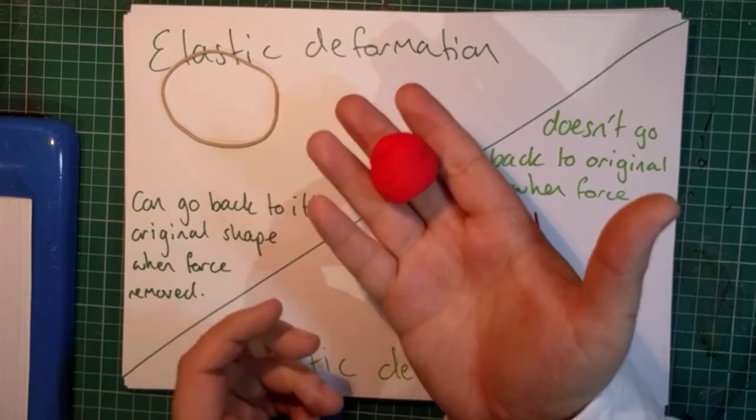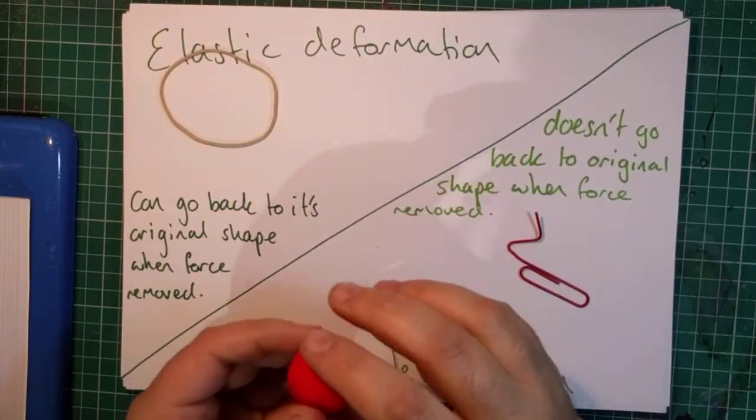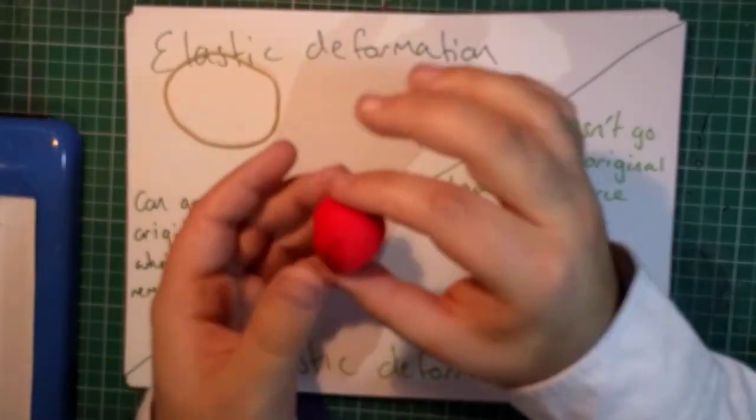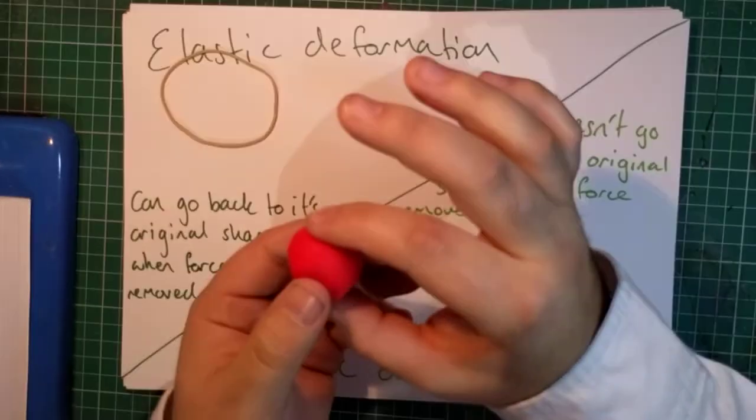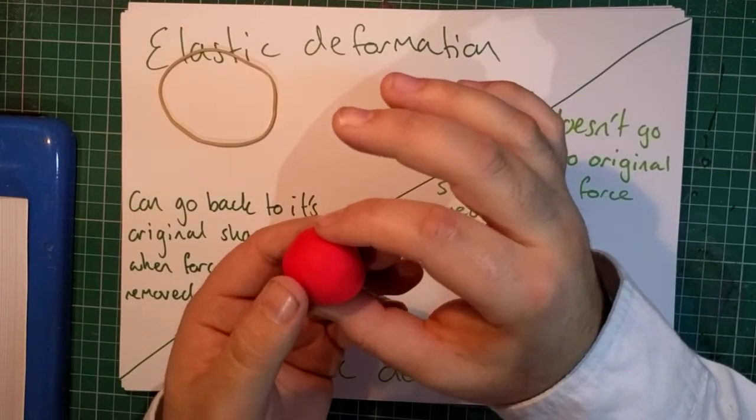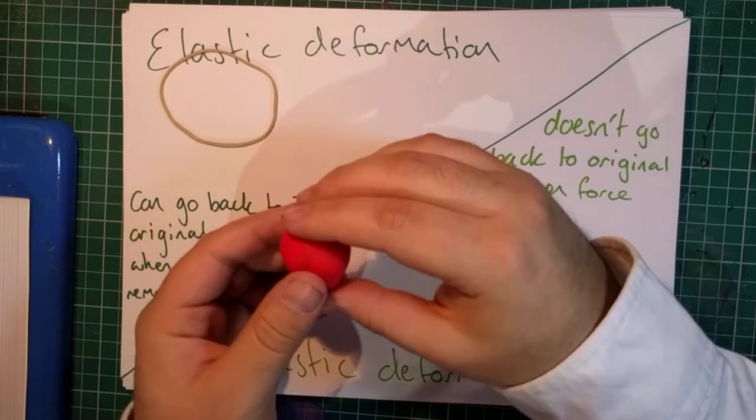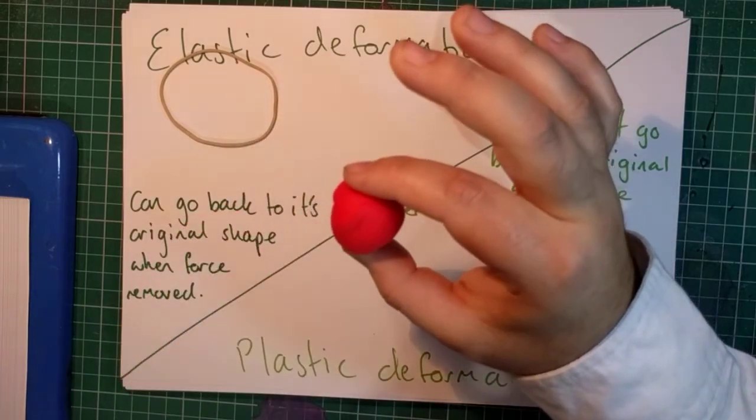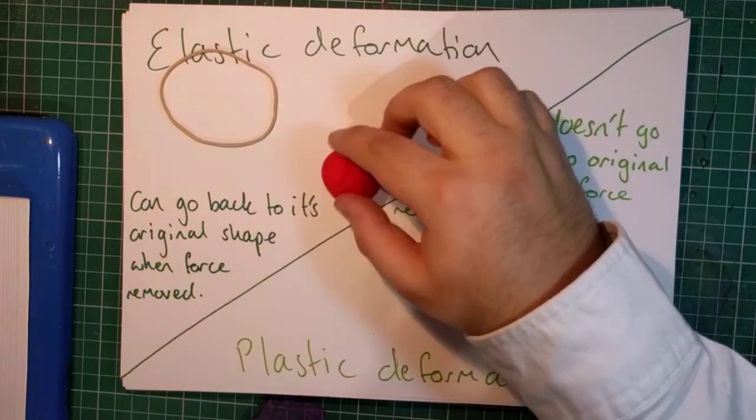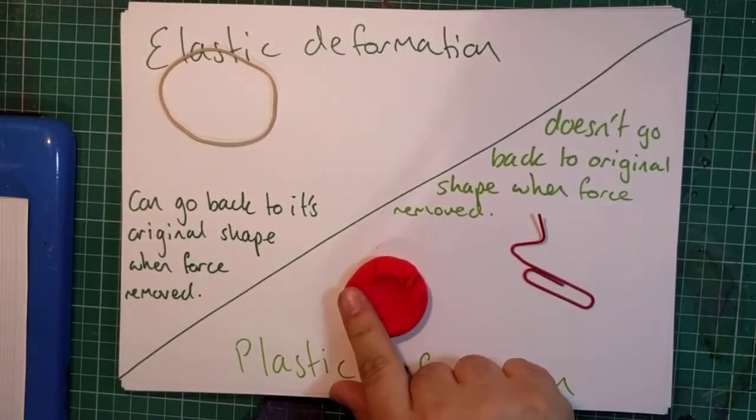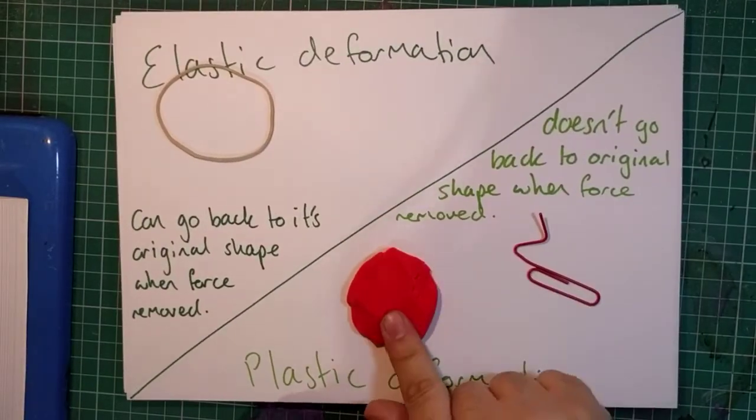If we go back to the ball of Play-Doh, it's very difficult to make Play-Doh deform elastically. It would be an absolutely minute force applied to make it elastically deform. With even a very small force applied, you are making it plastically deform. It does plastically deform very nicely, which is essentially why it's a toy for children.